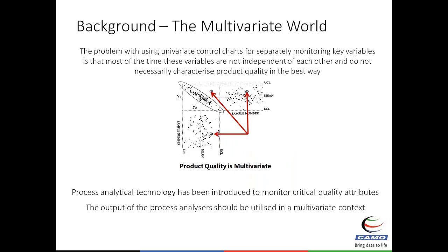Going back to the multivariate world background — if you use individual control charts to look at key variables or key process attributes, it might look like individually they are under control within their upper and lower control limits. But if two variables are correlated, we cannot spot that something is out of bounds just by looking at individual limits, because those limits form a rectangle, while the true operating region — the sweet spot — is defined by an ellipse.